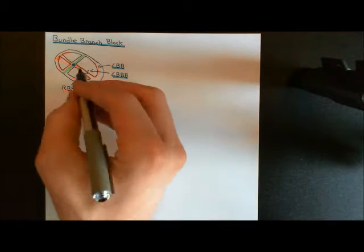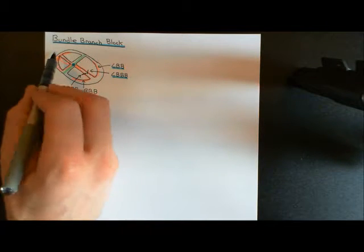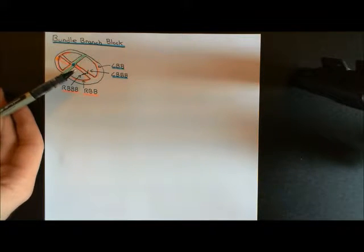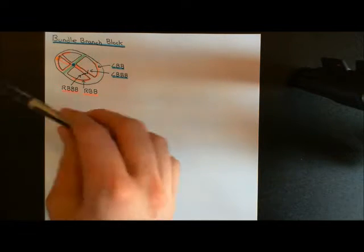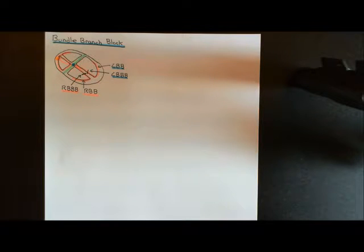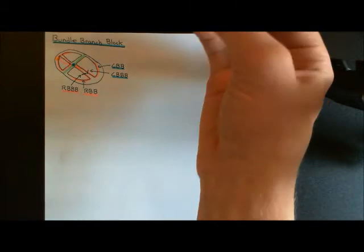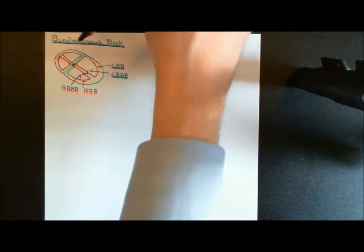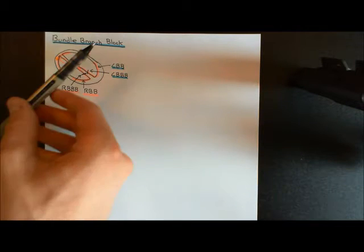In left bundle branch block, the damage is on the left side. The signal travels normally from SA node through AV node and bundle of His, then goes down the right bundle branch — not the left. This gives normal right ventricular depolarization, after which the signal propagates up to the left ventricle. So the cardiac vectors point in opposite directions: left-to-right in RBBB, right-to-left in LBBB.